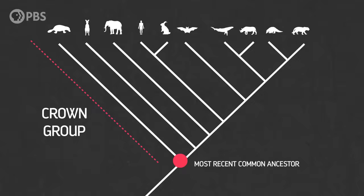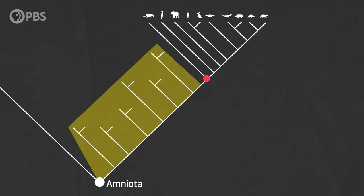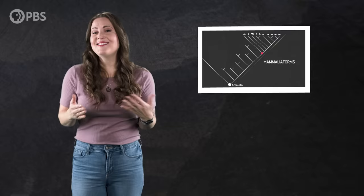Just outside the crown group are its extinct relatives — the ones that branched off before the common ancestor of the crown, but are still more closely related to the crown group than to anything else. If we trace these back to their most recent common ancestor with crown mammals, we end up with a group known as the mammaliaforms. So that's us, plus our extinct relatives outside crown mammals. And those early mammaliaforms were like us in some ways, but weren't quite there yet in others.